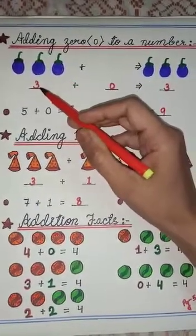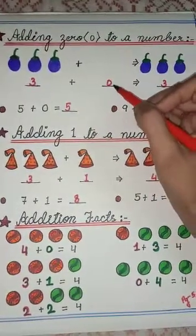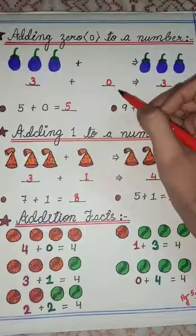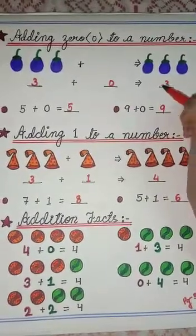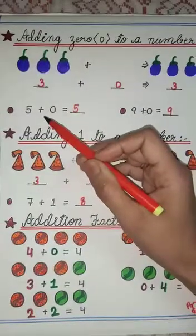So here we had 3 branches. So 3 plus 0, nothing is 0. 3 plus 0 gives us 3 which we had earlier. See this, you will understand better.